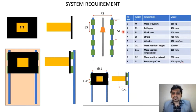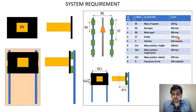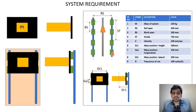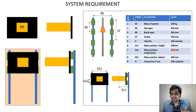These are our system inputs: mass of the system is 150 kg. Other details include the rail span, block span, and stroke — which is how much distance we want to move from one place to another. Velocity is also important and depends on your cycle time calculations — how much cycle time you need to move the body from one place to another.